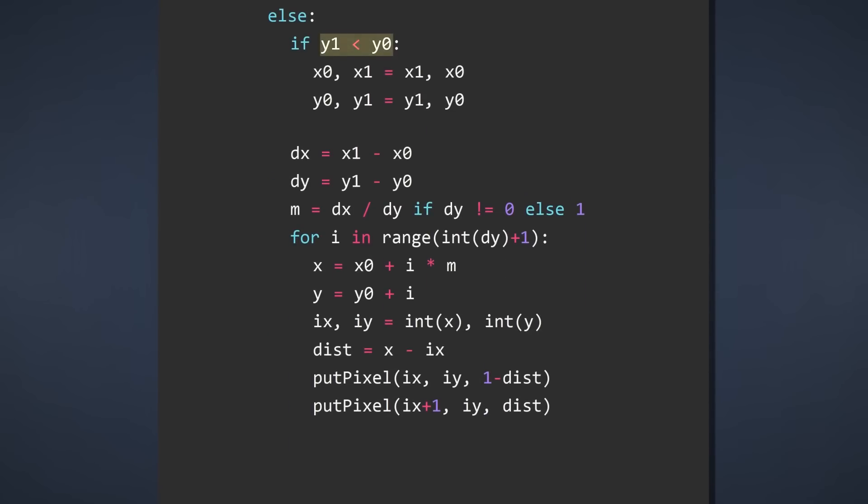So here we check the y axis to determine if we flip the points. And the most important difference is that our loop loops through the number of vertical pixels. And of course, we swap the x and y calculations.